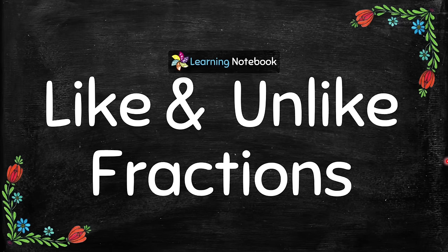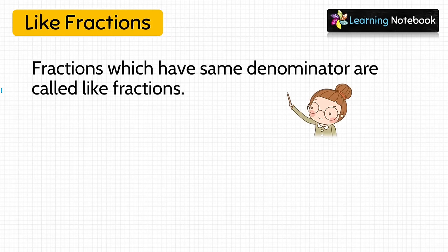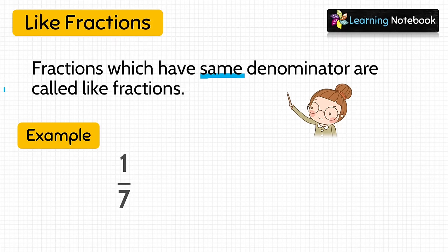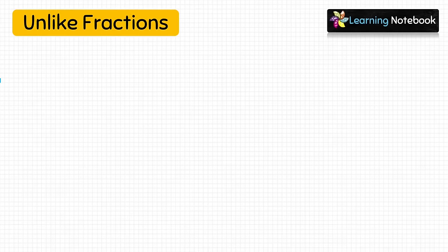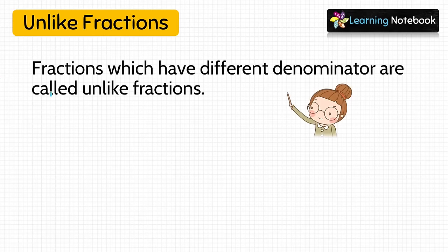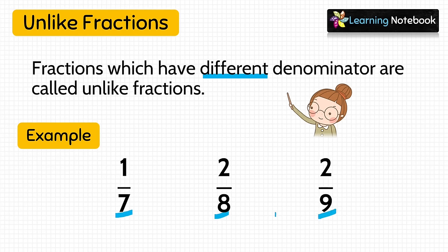Next, let's learn about like and unlike fractions. Fractions which have the same denominator are called like fractions. For example, 1 by 7, 2 by 7, and 5 by 7 are like fractions because they have the same denominator 7. Fractions which have different denominators are called unlike fractions. For example, 1 by 7, 2 by 8, and 2 by 9 are unlike fractions because they have different denominators 7, 8, and 9.